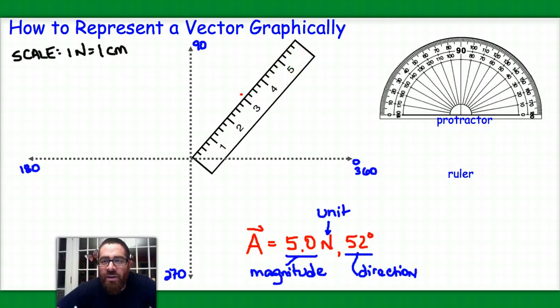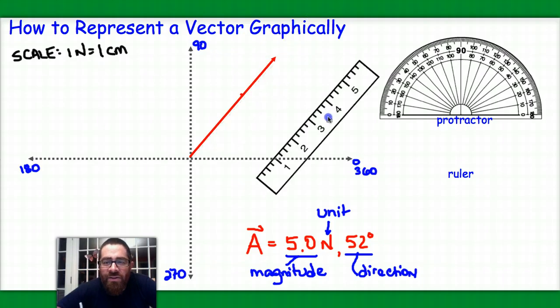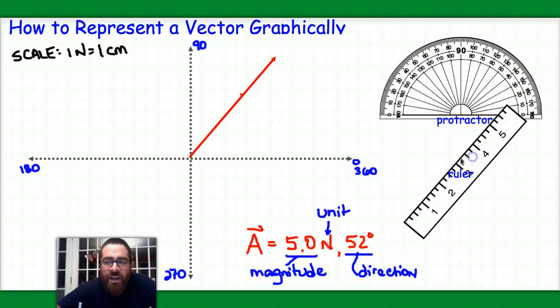So let me go ahead and sketch my vector. It needs to be 5 centimeters long. Starting at the origin, it needs to be 5 units long, passing through 52 degrees. And now it's met both of these requirements. I can get rid of this ruler now, and I should be able to recognize that this is now vector A. I could label it.